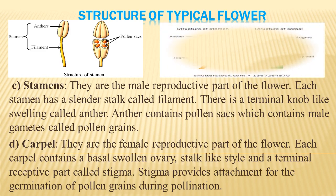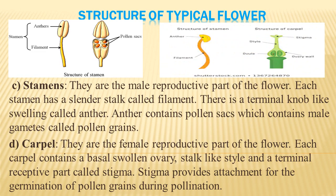The female reproductive part of the flower is known as the carpel. Each carpel has three important components: the ovary, style, and stigma. The ovary is present at the basal swollen part. From the ovary there is a stalk-like structure known as the style, and at the terminal part of the style is a receptive portion known as the stigma. The stigma provides attachment for pollen grain germination during pollination and is sticky in nature so pollen grains stick to it. Both stamen and carpel are essential parts of the flower.